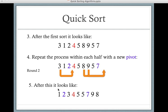So after the second round of sorting, we're getting close: 1, 2, 3, 4, 5, 5, 7, 9, 8. So we're almost there, but we need one more pivot.